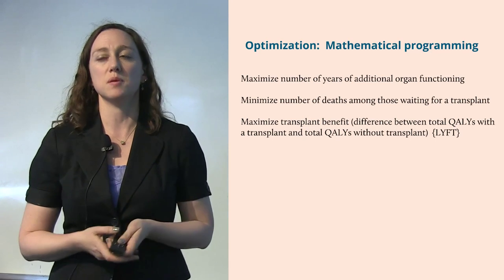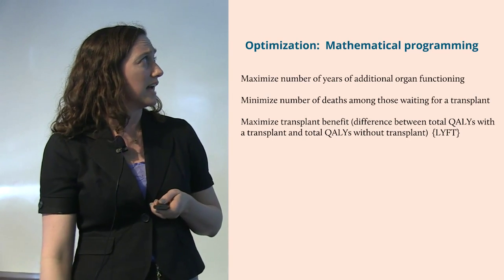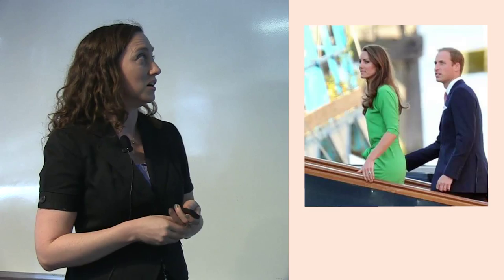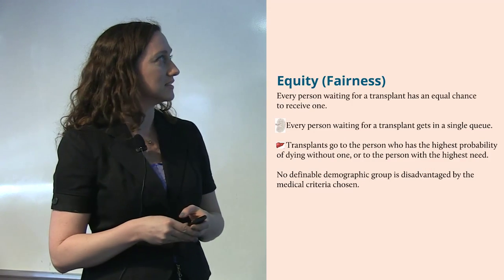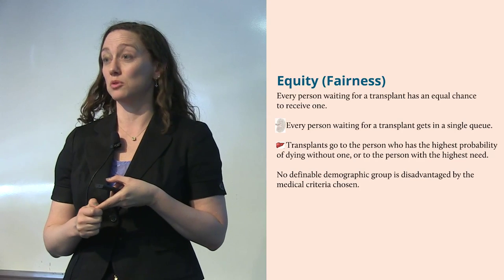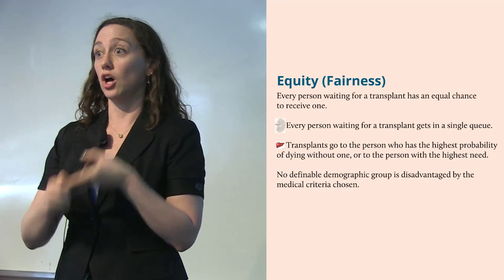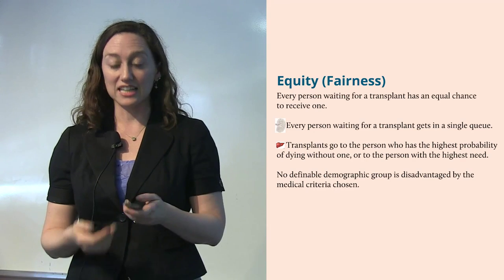Even worse, if we used only benefit to define who gets an organ transplant, only young, rich, white people — only people with higher education and no other diseases — would get them, and that's not acceptable anywhere. So we start to say you must also consider equity and fairness. But this is really difficult to define quantitatively. Does it mean every person waiting has an equal chance to get one? You could argue for a lottery — just put everyone's name in a hat — and it is actually equitable, but it's terrible for getting the right organ to the right candidate at the right time.